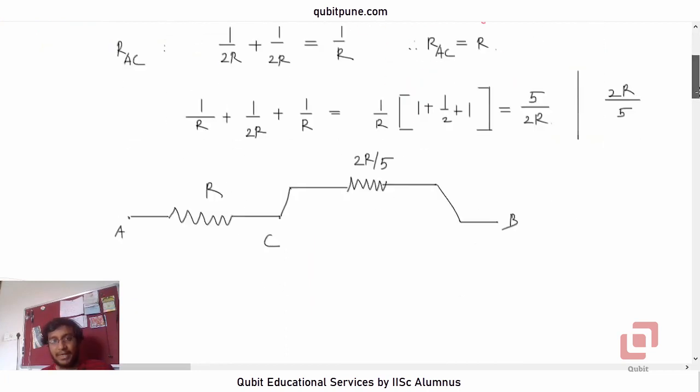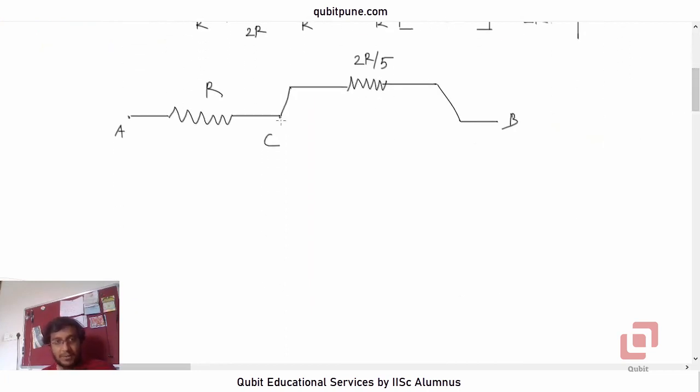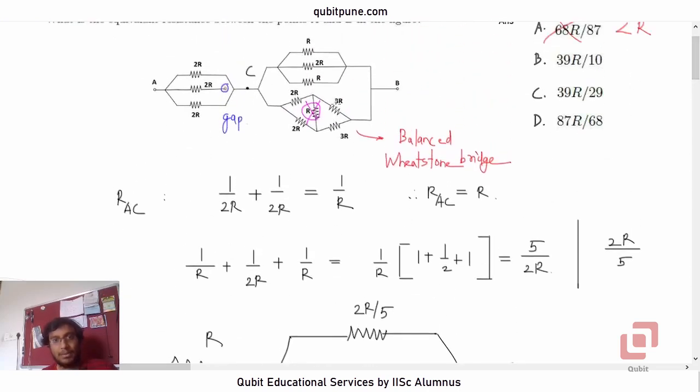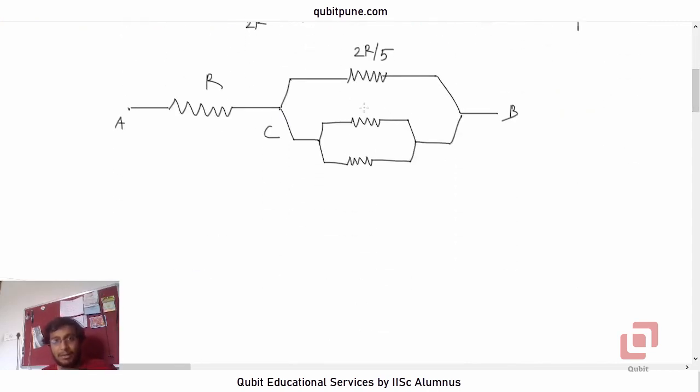The equivalent diagram will look something like this now. So it will be 2R plus 3R is 5R. They will also be in parallel, so 5R and 5R. In fact, between C and B we now have 3 resistors in parallel.